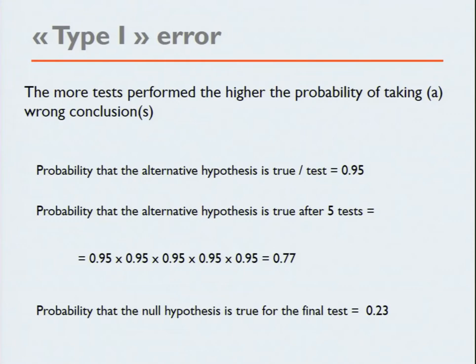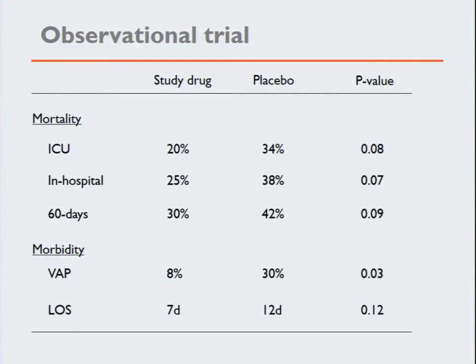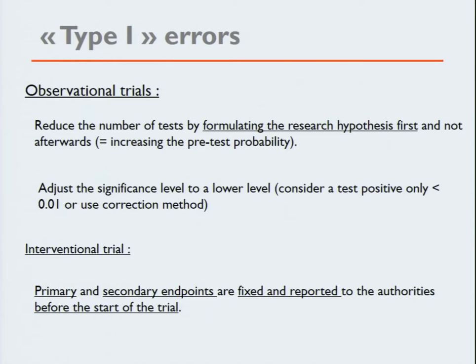Suppose in an observational trial you compare a study group versus placebo. You look at ICU mortality: 0.08 — difficult to publish. Then in-hospital mortality: 0.07. Then 60-day mortality: 0.09. Then length of stay: not different. Then suddenly ventilator-associated pneumonia is less, p=0.03 — you say you found something. But the real p-value is not 0.03; with five tests performed, it will be about 0.23. That's the problem in observational trials. You can reduce the number of tests by formulating the research hypothesis first, which increases your pre-test probability that what you see is true.